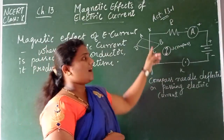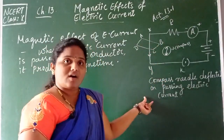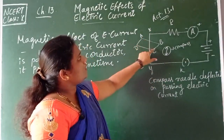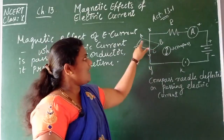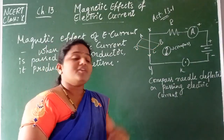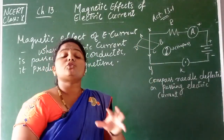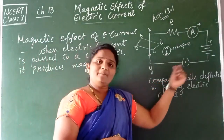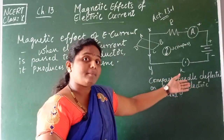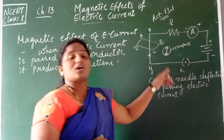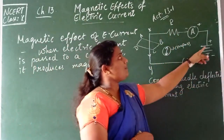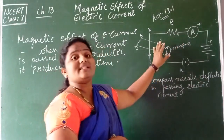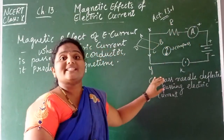First, we connect a thick straight copper wire across the ends X and Y, such that it is perpendicular to the plane of paper — here, ABCD is the paper. After making sure of this, we insert the key. Once the key is inserted, the circuit becomes closed, and current starts flowing from the battery through the entire circuit.